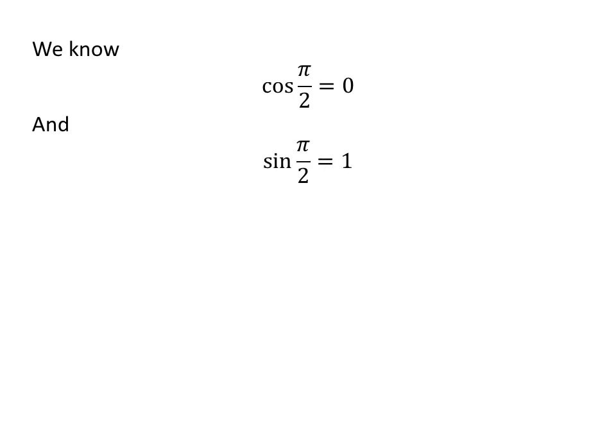We know cos(π/2) equals 0 and sin(π/2) equals 1. So, the polar form of (1 + i)/(1 - i) is cos(π/2) + i sin(π/2).